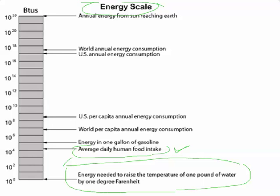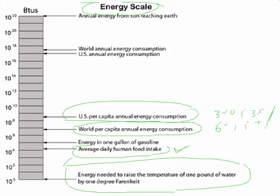Everyone in the world consumes about 65 million BTUs annually. World per capita annual energy consumption is roughly 65 million BTUs per person. If you compare that with the United States per capita consumption, that is about 300 million BTUs per year per person, which means that in the United States, every one of us is consuming roughly five times what an average person in the world consumes, energy-wise.